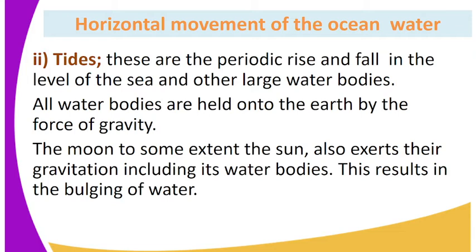All water bodies are held onto the earth by the force of gravity. The moon, and to some extent the sun, also exerts their gravitational pull on the earth, including its water bodies. These result in the bulging of water.